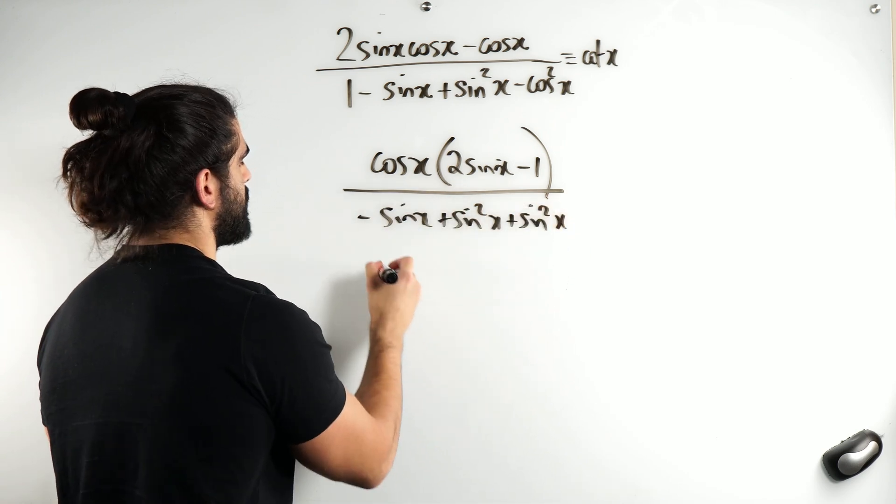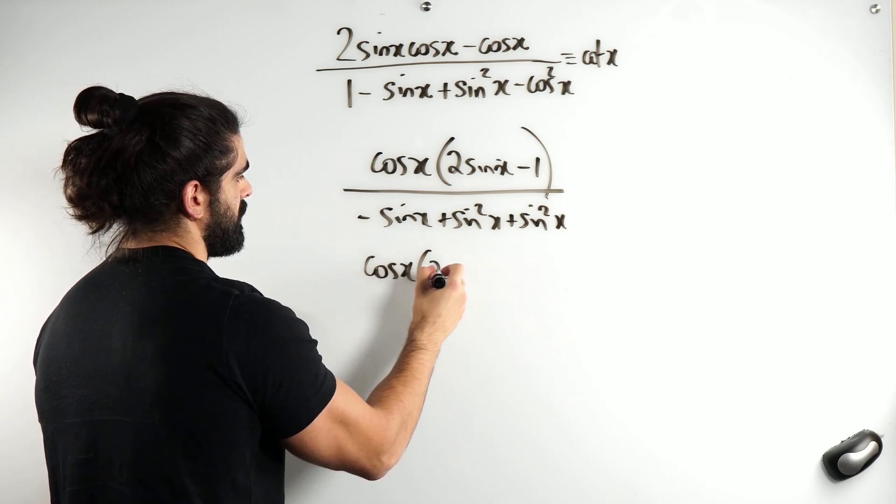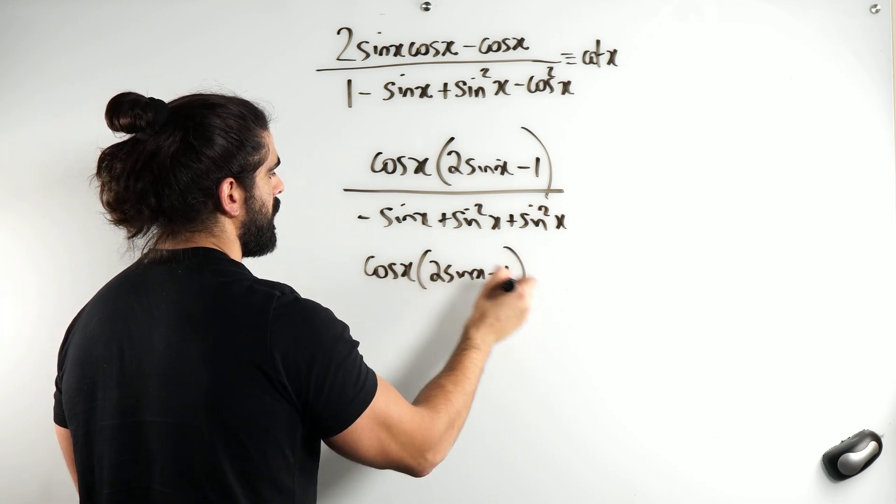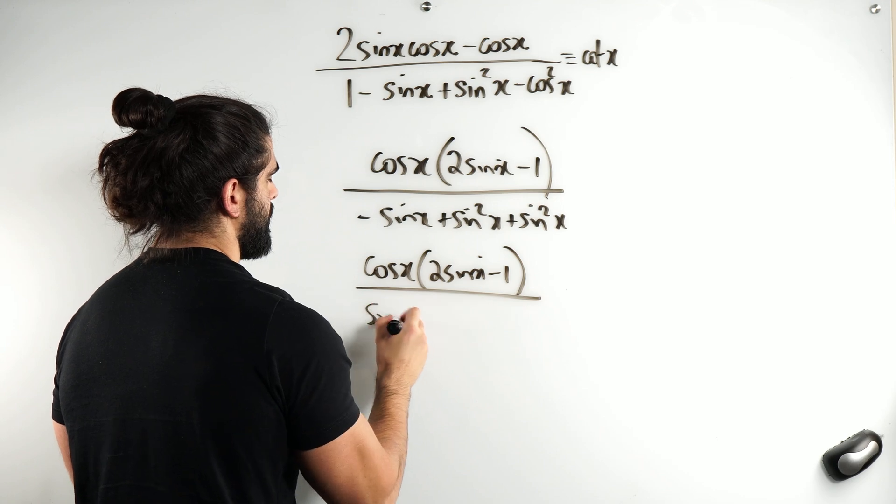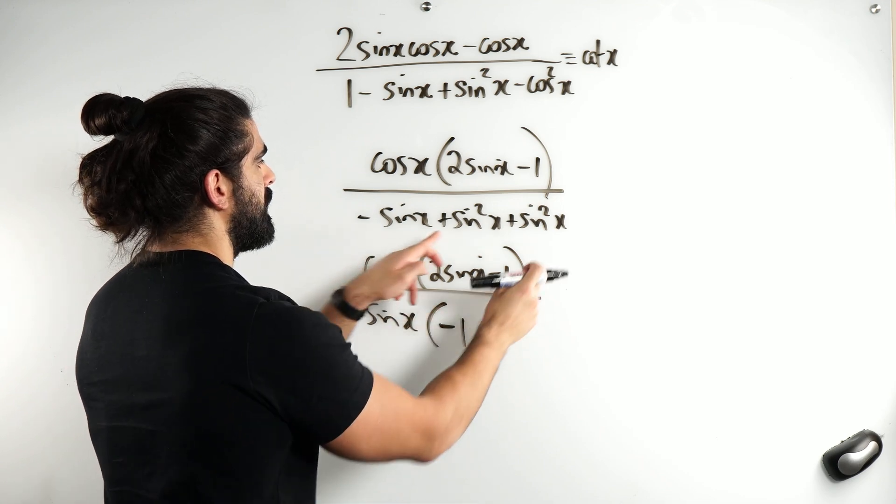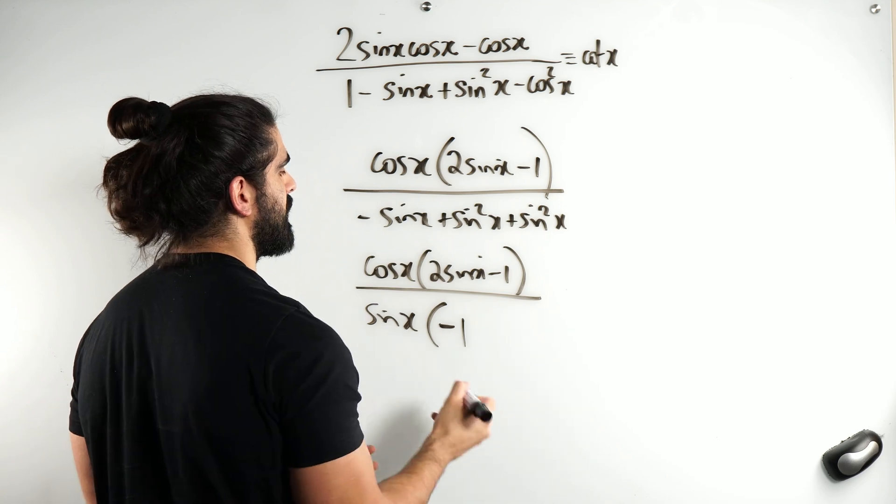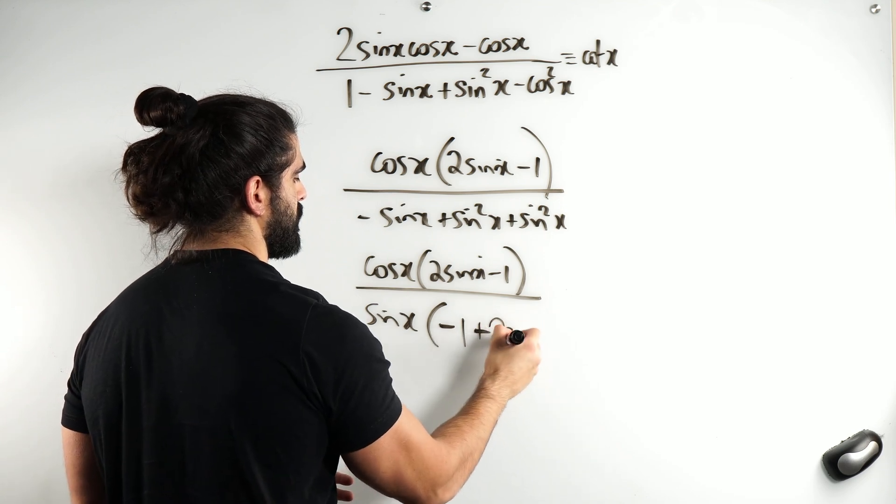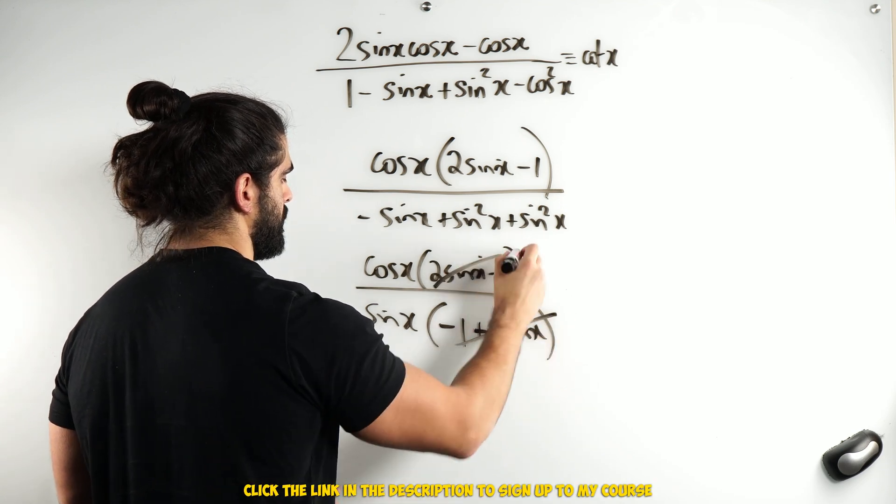And I can factorize out the sine as well, so I get cos x, 2 sine x minus 1, over sine x, which you'll get negative 1. This gives you 2 sine squared when you take out the sine. You just get 2 sine, boom, cot.